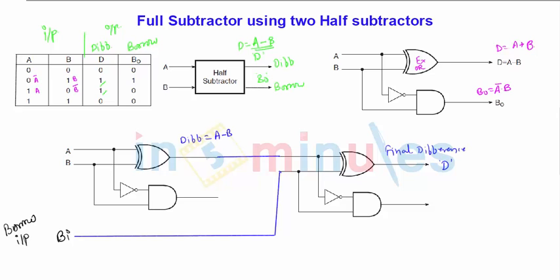That is nothing but this will be final difference D. So this is going to be the final difference D because it is A minus B, and this borrow input should be again subtracted. So this will be A - B - B_in, that is nothing but D final difference.